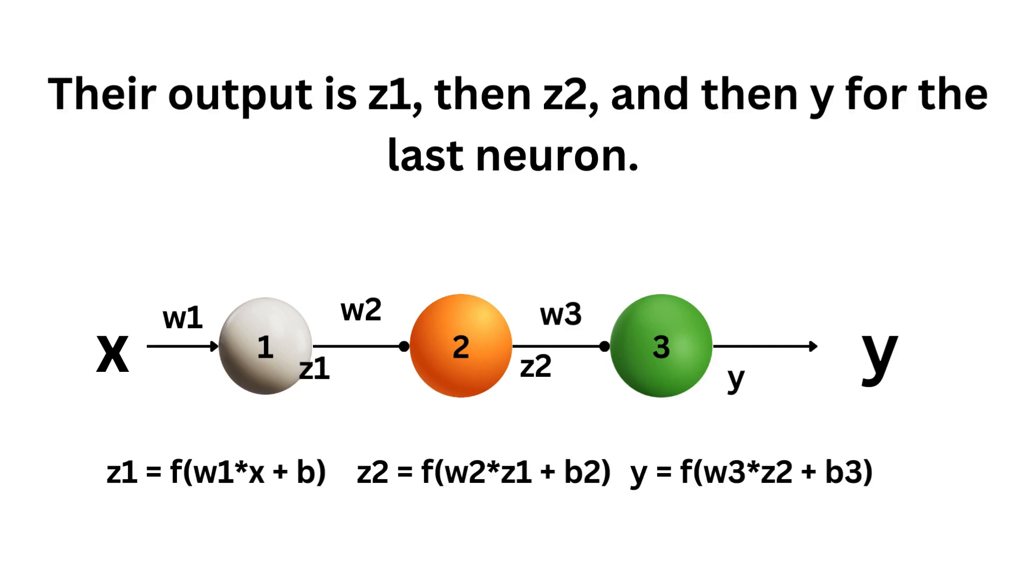Their output is z1, then z2, and then y for the last neuron, and their formula for z1, z2, and y are given below. Same thing as we saw with the single neuron example.